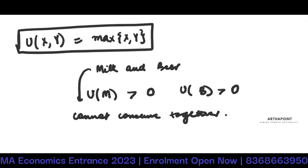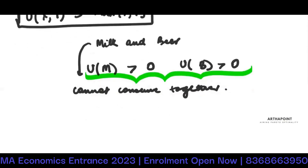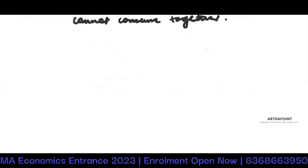Please understand the difference. Here it's not that the utility is not positive — the only thing is that they cannot be consumed together. So my aim is to maximize my utility.